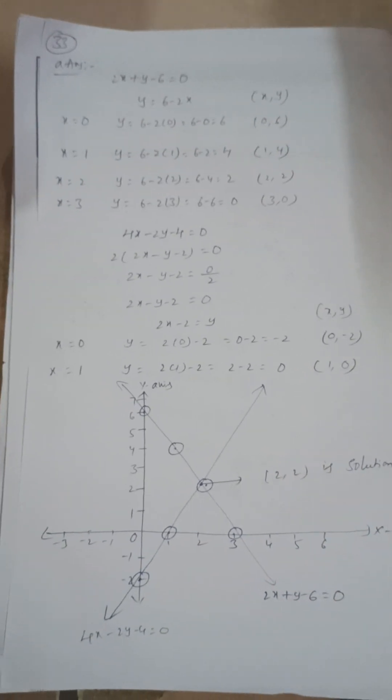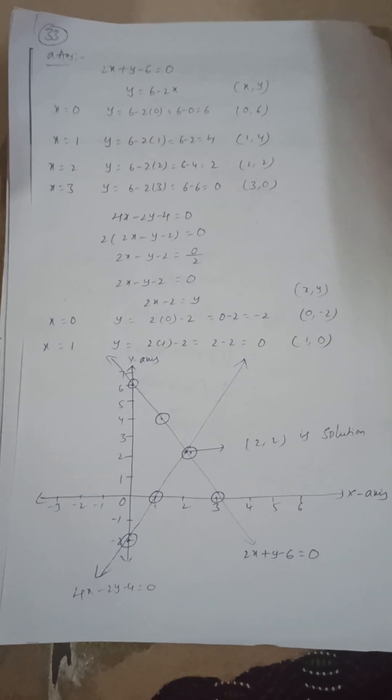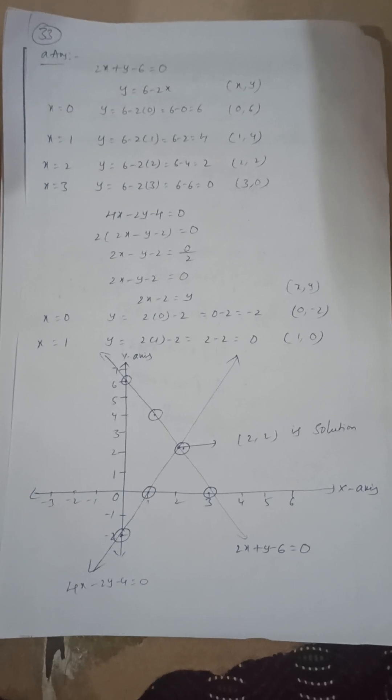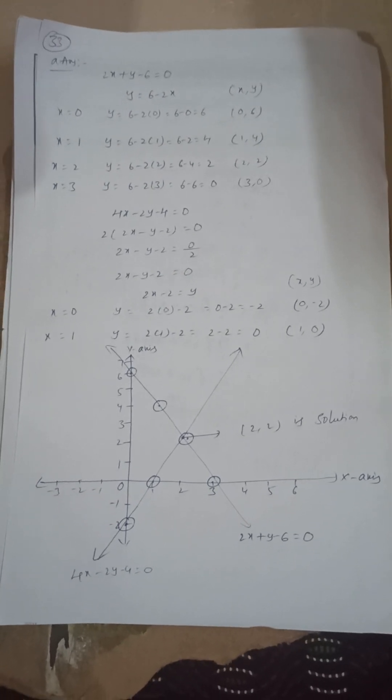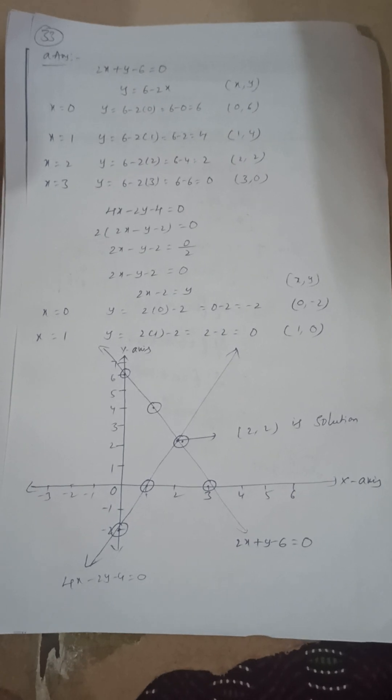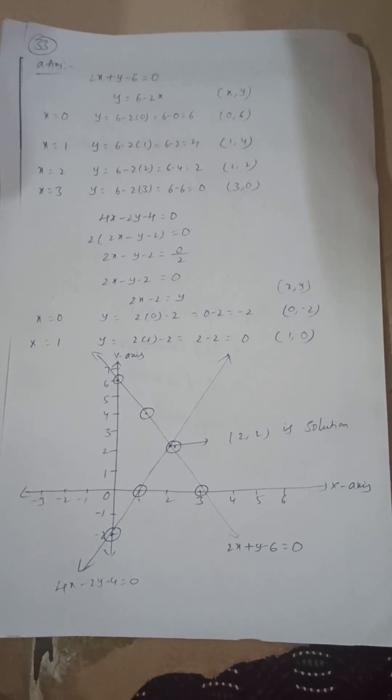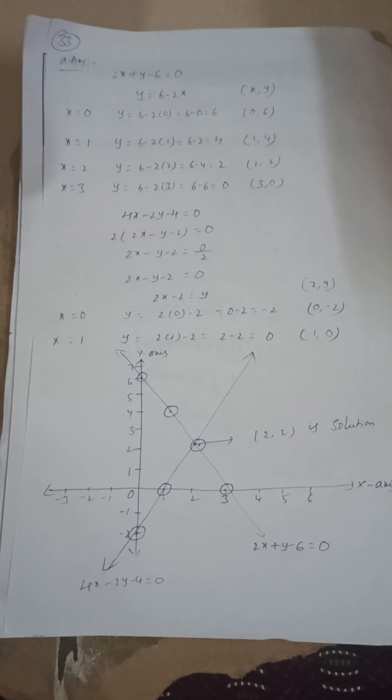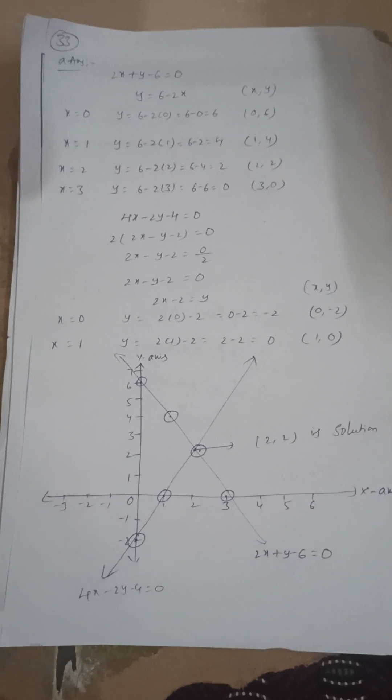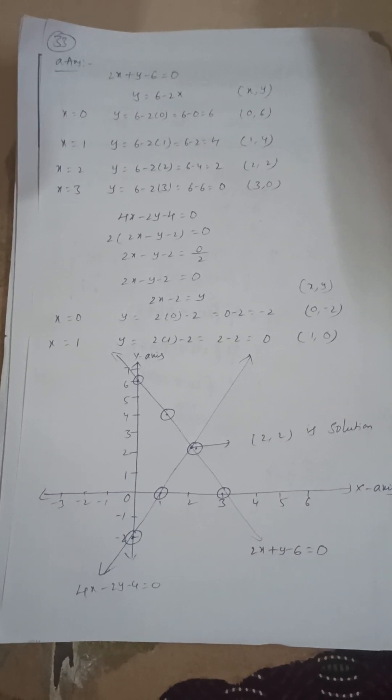Next, 33a: graph. Here the scale is, x-axis one centimeter equals one unit, y-axis also one centimeter is equal to one unit. So the intersection point is 2 comma 2, which is the solution of the two equations.